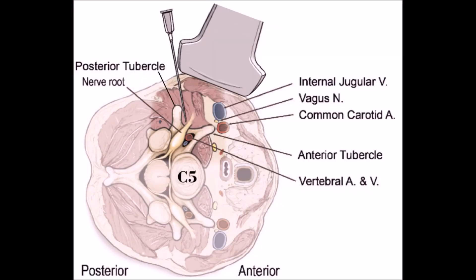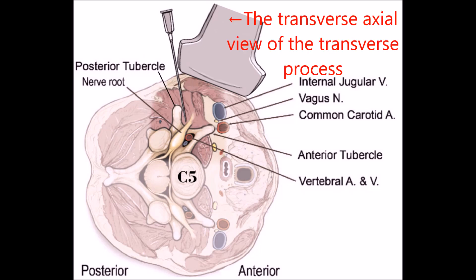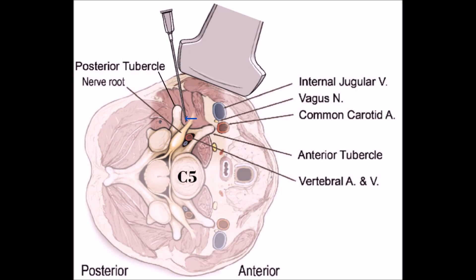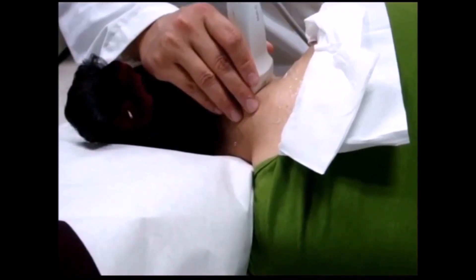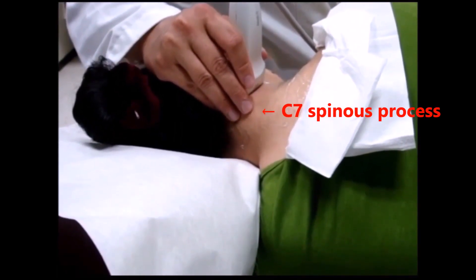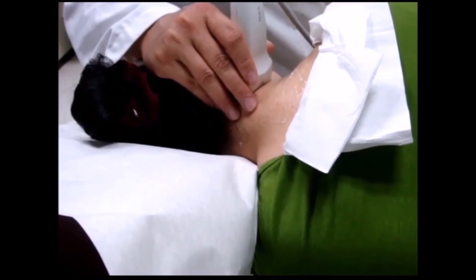This illustration shows the orientation of the ultrasound transducer. The transducer is placed transversely to obtain the transverse axial view of the anterior and posterior tubercles of the transverse process. The injection needle is inserted in a posterior to anterior direction, in-plane with the transducer. The injection target is the intertubercular area between the nerve root and the posterior tubercle. The C7 level can sometimes be easily identified as it has the longest transverse process and can be palpated.